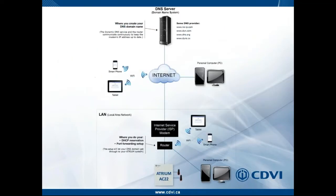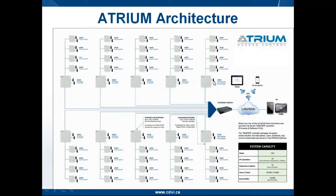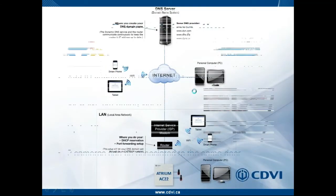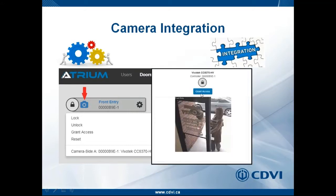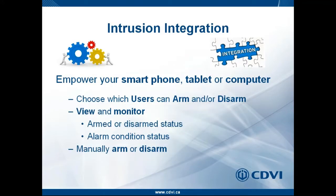This is per controller. As seen in the diagram, it's one per reader, or you could have two cameras on one reader, giving you five doors with two cameras each. In the web browser, under the Doors menu, you can go to a door and associate a camera to it. Any door that has a camera associated will show a camera icon — click it to view the camera, and from that pop-up window with the streaming live view you can also grant access to that door.